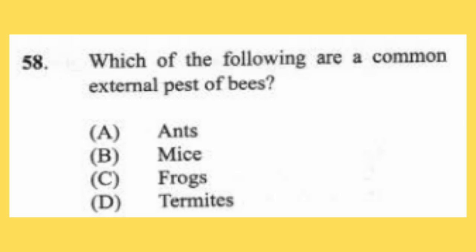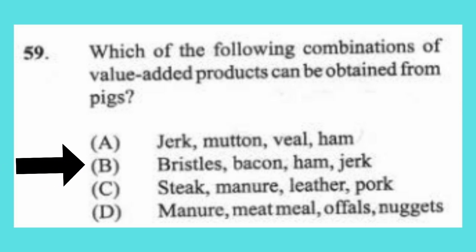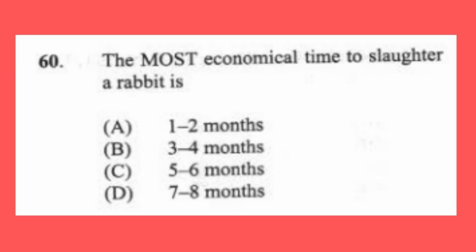Question 58: Which of the following are common external pests of bees? (a) ants, (b) mice, (c) frogs, (d) termites. The answer is C, frogs. Question 59: Which of the following combinations of value-added products can be obtained from pigs? (a) jerk mutton, veal, ham, (b) bristles, bacon, ham, jerk, (c) steak, manure, leather, pork, (d) manure, meat meal, offals, nuggets. The answer is B, bristles, bacon, ham, jerk.